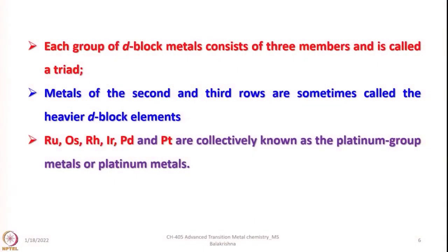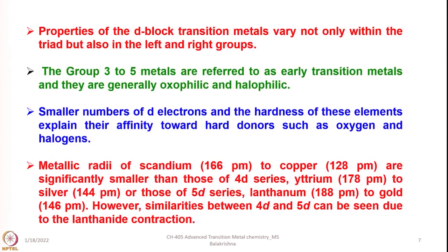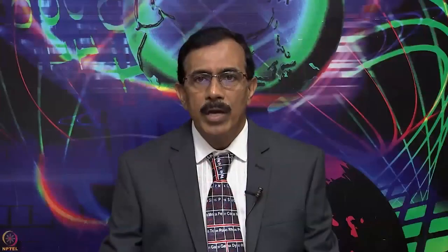Ruthenium, osmium, rhodium, iridium, palladium, and platinum are collectively known as platinum group metals. When you see a book stating 'platinum metals,' you should not confuse it with only platinum — the term refers to these 6 elements together. Properties of the D block transition metals vary not only within the triad, but also across the left and right groups. Group 3 to 5 metals are referred to as early transition metals and they are generally oxophilic and halophilic.